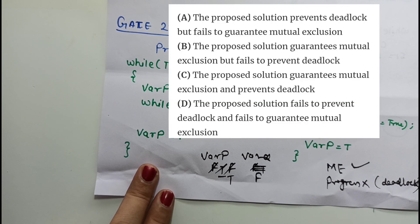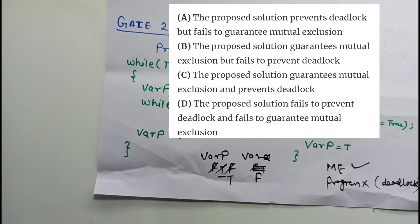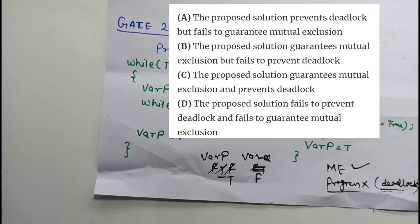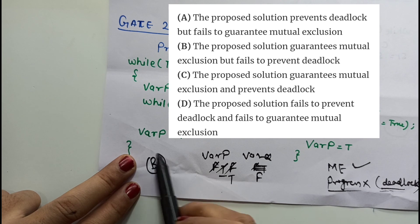Looking at the options for this question: option A says the solution prevents deadlock — no. Option B says the solution guarantees mutual exclusion but fails to prevent deadlock — yes, this is correct. The construct guarantees mutual exclusion but fails to prevent deadlock. So option B is the correct answer.